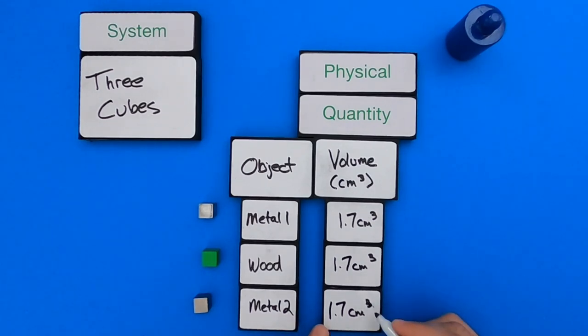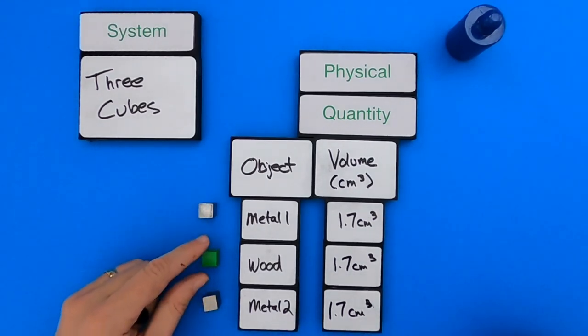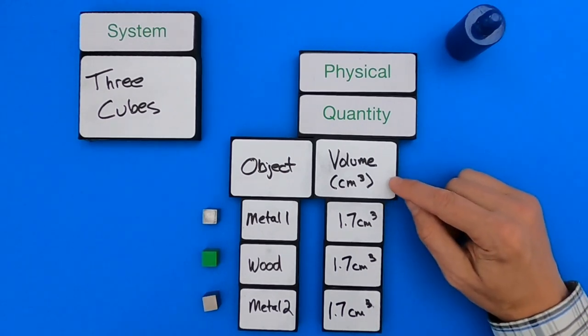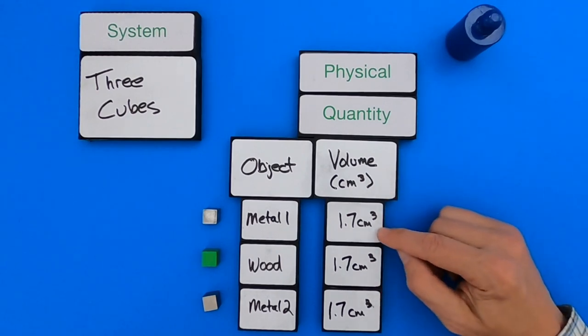So that was pretty easy. Each of these, when I ordered them, are the exact same size. So they have the same dimensions. And so length, width, and height are 1.2. And so if I multiply those, I get 1.7 cubic centimeters. I didn't do this in my head. I did this earlier with the calculator. So now we've got a physical quantity. We've got the volume of the cubes, and then we've also got the unit that they're measured in.